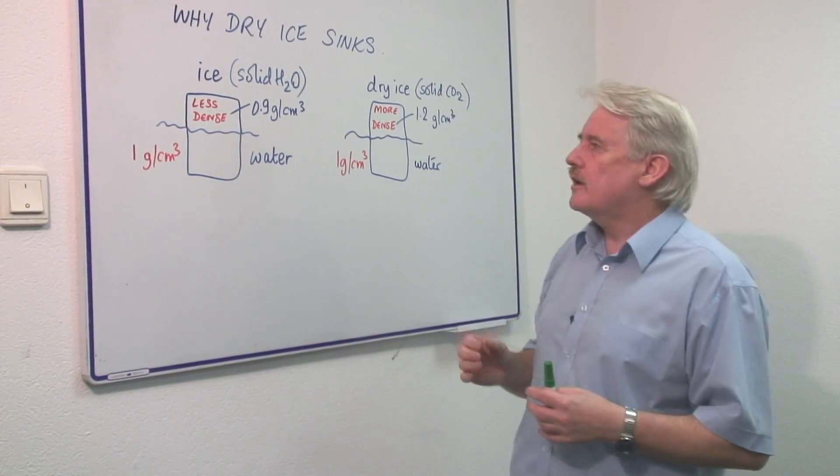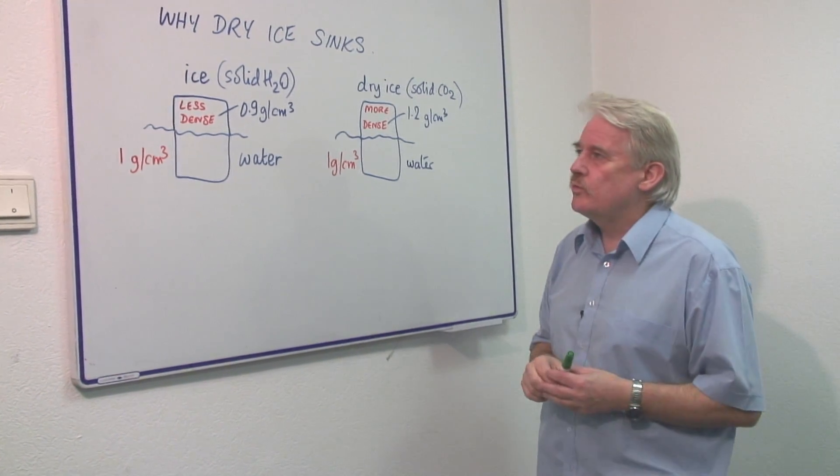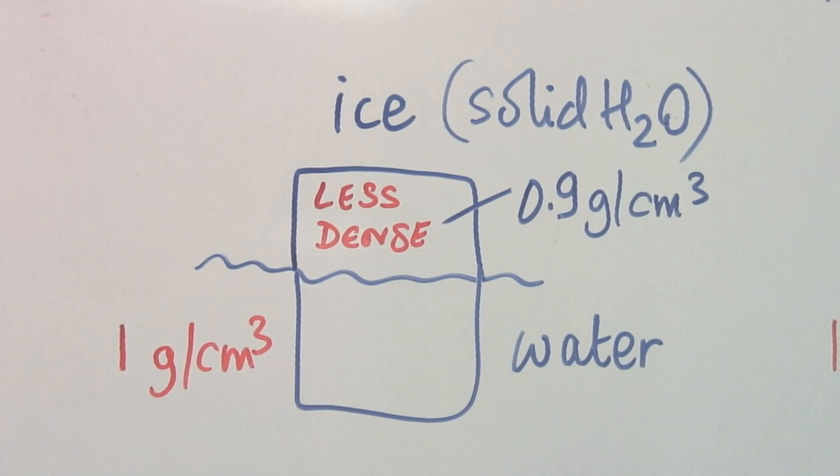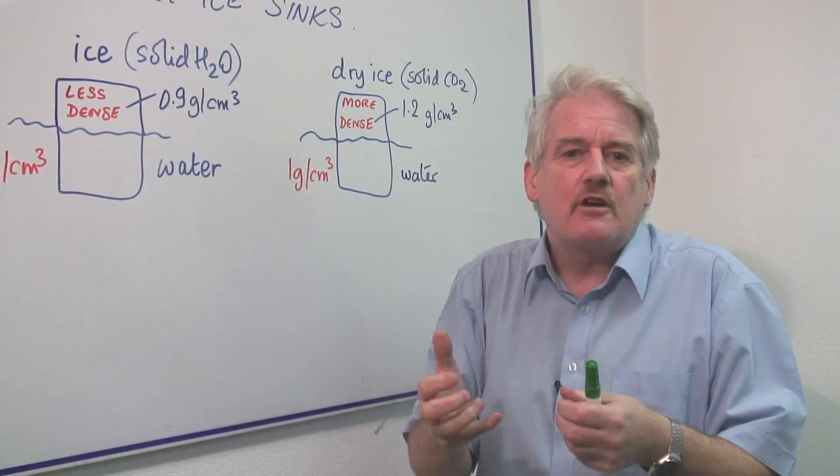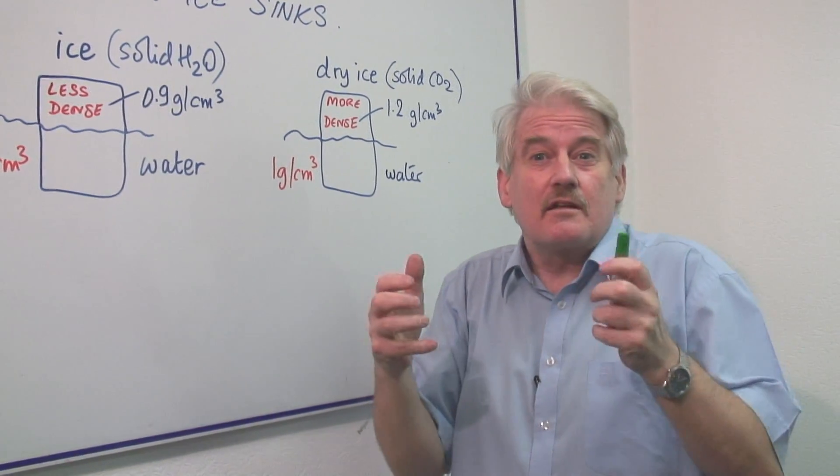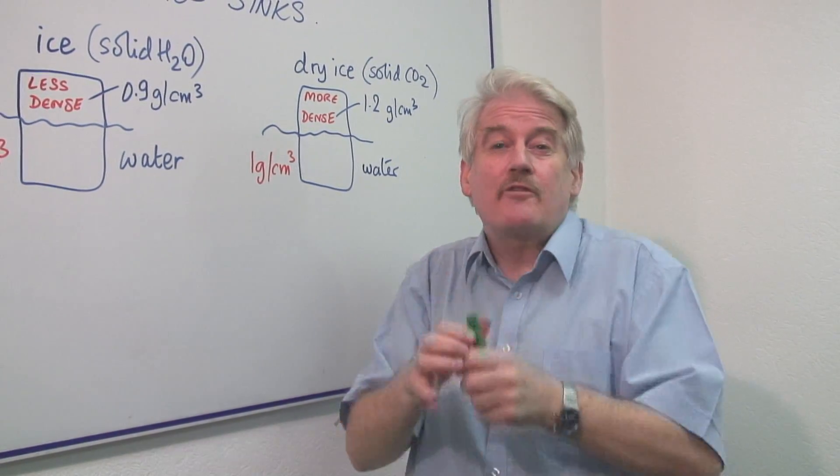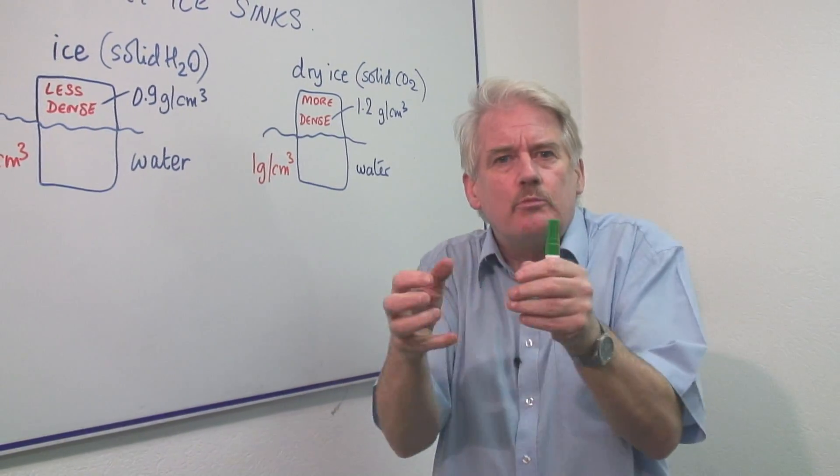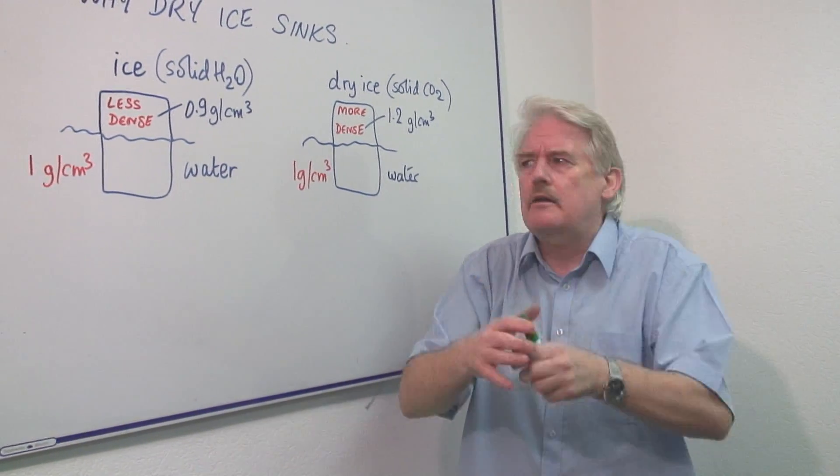Sinking and floating has to do with density. That is how much a cubic centimeter or cubic meter of a material weighs. A dense material weighs a lot for the same amount of material, same volume of material, same space taken up.